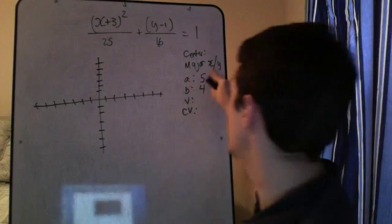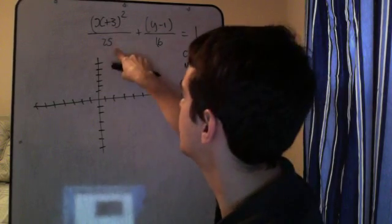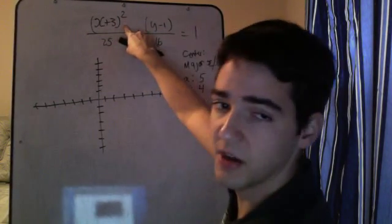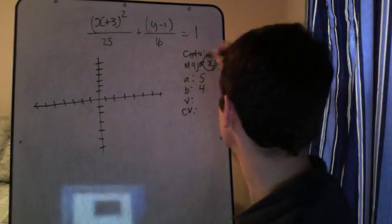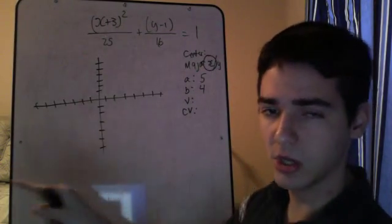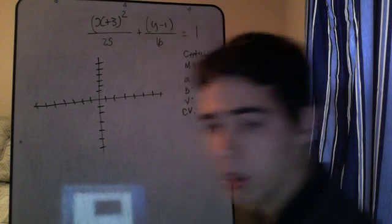Okay. So as you notice, a is larger than b. And 25 is greater than 16. And it's under x, which means x is our major axis. Which means it'll open along the x axis. Meaning it'll be longer along the x axis.